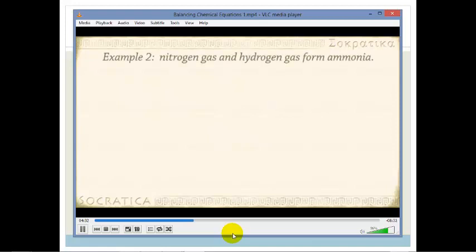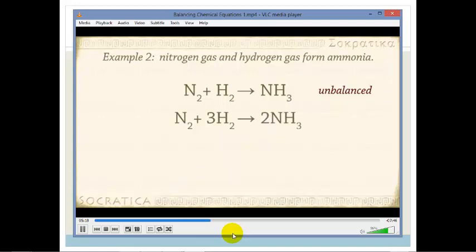Let's try another one. Nitrogen gas and hydrogen gas react to form ammonia. We write that as N2 plus H2 yields NH3. That's unbalanced. We can see that if we count up the atoms on both sides. On the left there's 2N and 2H, and on the right there's 1N and 3H. I see I have 3H on the right and 2H on the left. The lowest common multiple is 6, so I'm going to try to get 6H on both sides. To do that, I need to multiply the H2 by 3 on the left and the NH3 by 2 on the right. N2 plus 3H2 yields 2NH3. Let's check. On the left we have 2N and 6H, and on the right we have 2N and 6H. That's balanced.